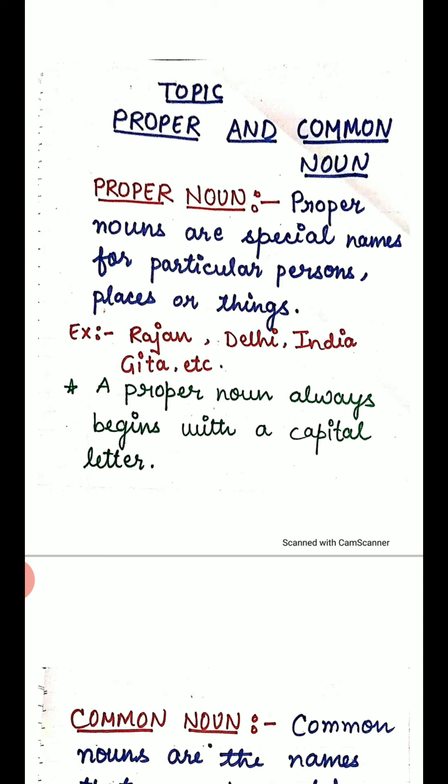What is proper noun? Proper nouns are special names for particular persons, places or things. Examples: Rajan, Delhi, India, Gita, etc.